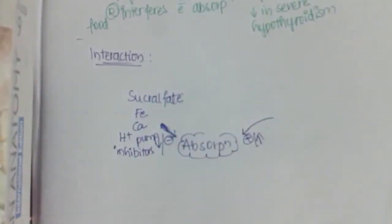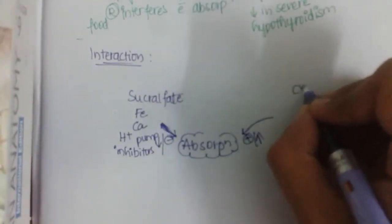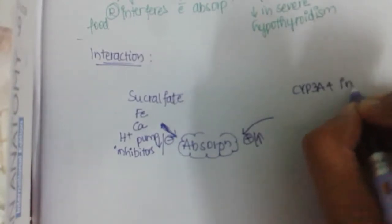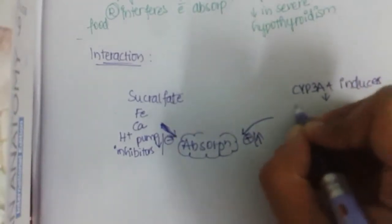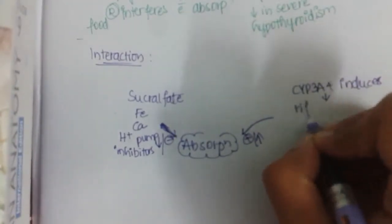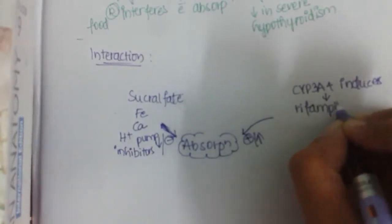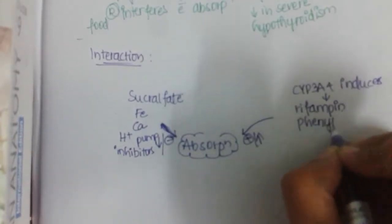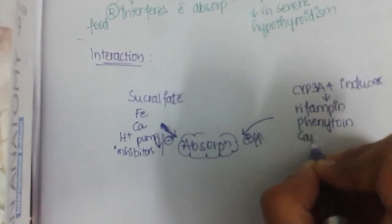On the other hand, drugs which activate or increase the absorption of thyroid hormones are basically CYP3A4 inducers, such as rifampin, phenytoin, and carbamazepine.